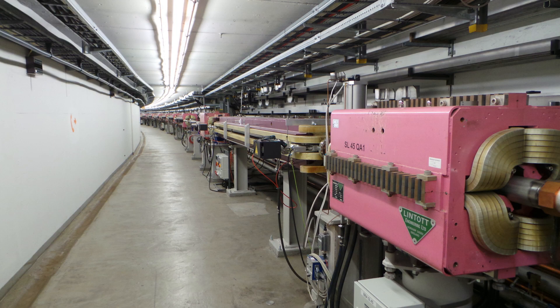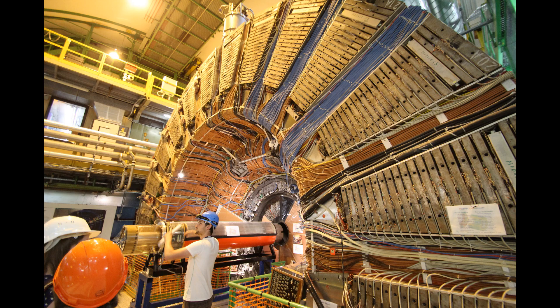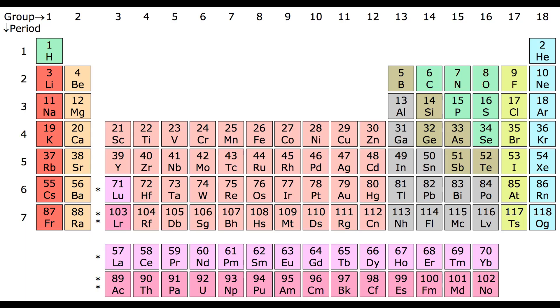In particle accelerators, lighter elements are typically bombarded with protons, neutrons, or alpha particles. The lighter elements used in the synthesis of synthetic elements are typically lighter nuclei such as hydrogen, helium, lithium, beryllium, and boron. Other elements such as carbon, nitrogen, and oxygen can also be used in some cases.